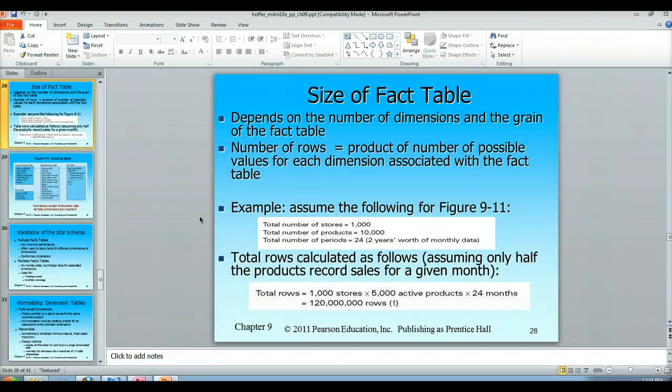We're going to have two completely different sets of products. We've got a thousand stores—our stores didn't change. We've only got 5,000 active products based on our assumption of winter and summer seasons, and we have 24 months. So that means we're going to have 120 million rows in this table for that span of time.